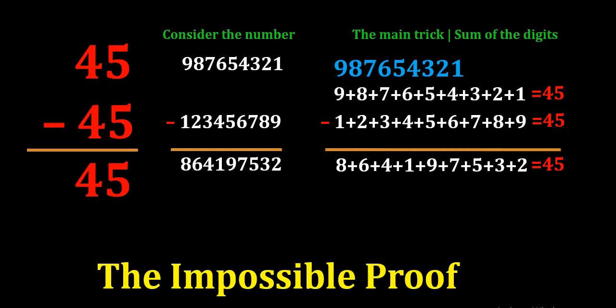So in reality, if we consider two numbers 987654321 and the reverse of it 123456789, if we subtract the two numbers, we get 864197532. So while considering the sum of the digits in these numbers, we get 45 minus 45 equals 45, and this is the impossible proof. So please subscribe to our channel Math1089. Thank you for watching. Please share this video.